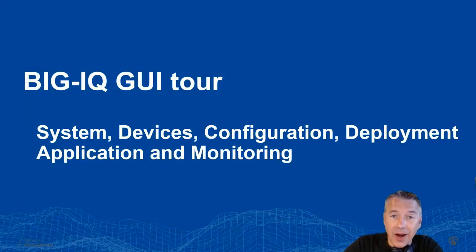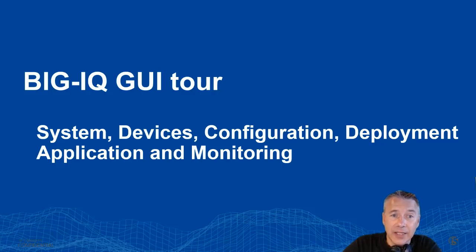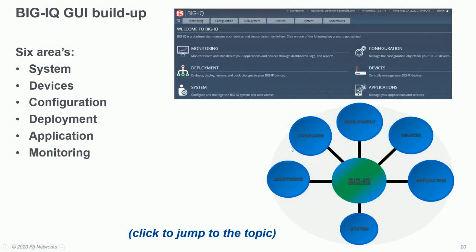We are at the last section of this first part of the BigIQ course. This section is about the BigIQ user interface — the GUI. You will see screenshots of important areas within the BigIQ UI to make you comfortable for the lab exercises that follow. The GUI has six different areas or top-level sections.